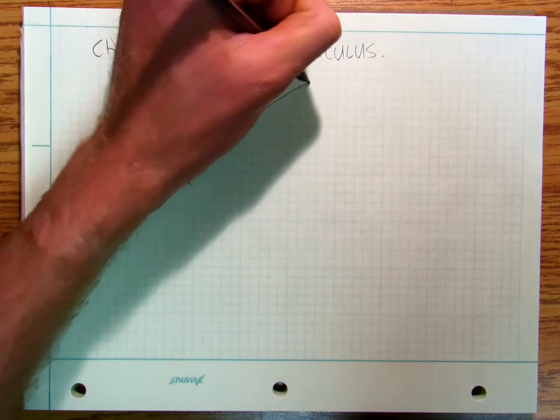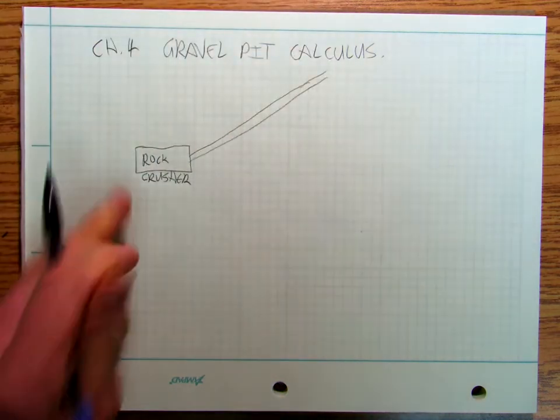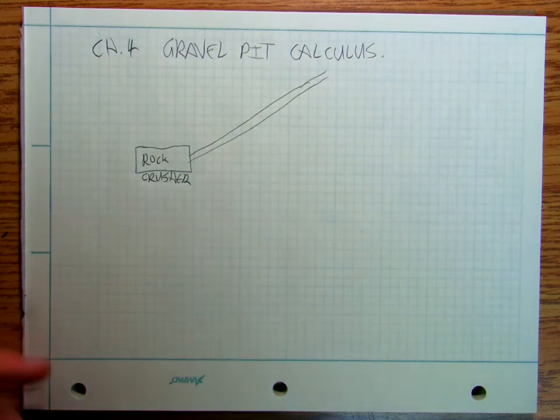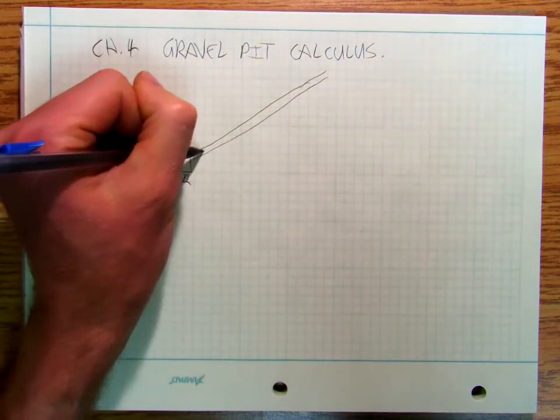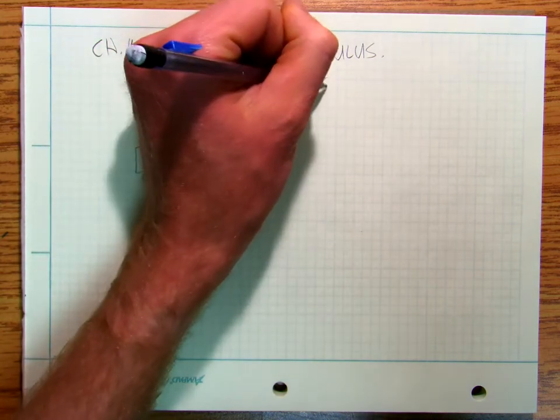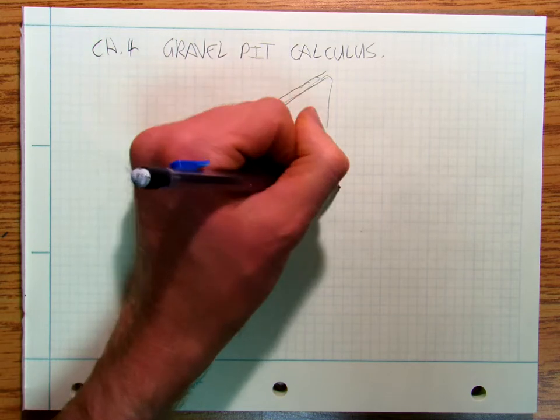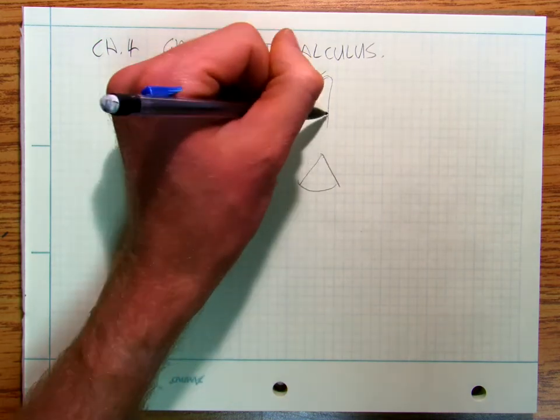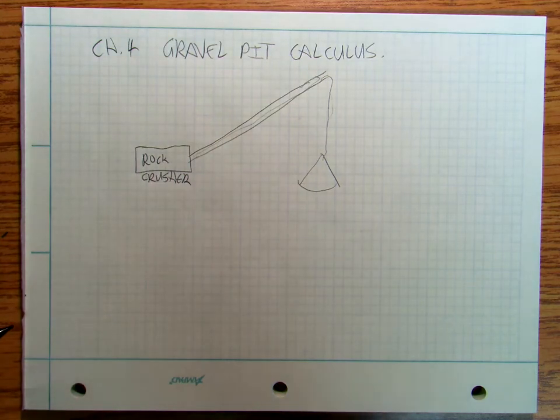And it's really cool because they come up and pour the rocks into the rock crusher and the rock crusher grinds them up into gravel and then a conveyor belt takes them up and drops them into a conical pile. So the rocks are dropping onto a conical pile and you're just like, oh, that's sweet, I'm crushing rocks.